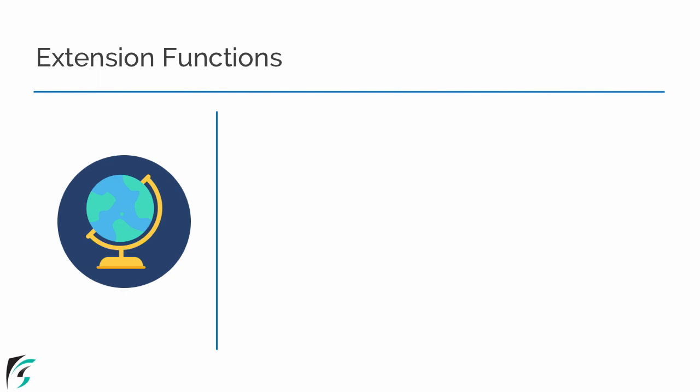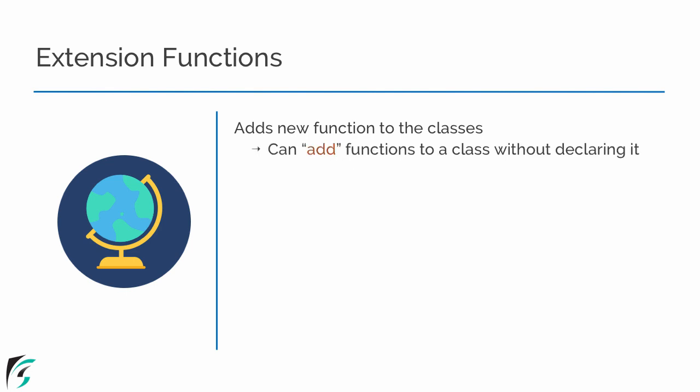Hi, this is Reng Siddharth and welcome to the next video of this module on functions. In this video we will talk about extension functions in Kotlin. The purpose of an extension function is to add a new function to an existing class — it simply adds a function to a predefined class without declaring it inside the class. These new functions behave just like static functions in Java, and during compilation, the Kotlin compiler also converts them into static functions internally.